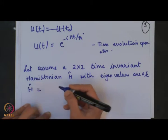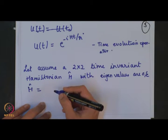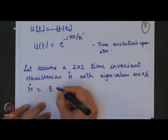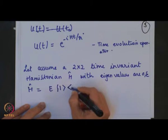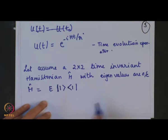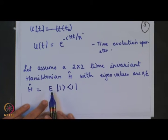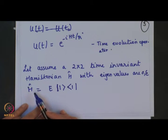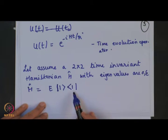The Hamiltonian operator can now be written in the form with eigenvalues 0 and E. Coming back to this notation, the Hamiltonian operator will be written in this matrix form. You have to recollect the problems done in tutorial 3 and tutorial 4.